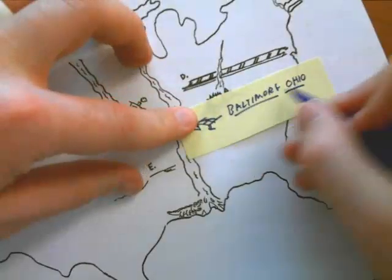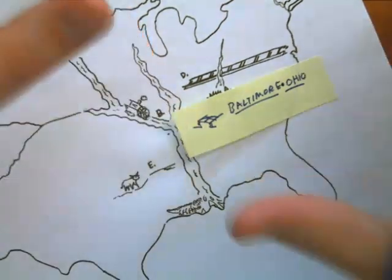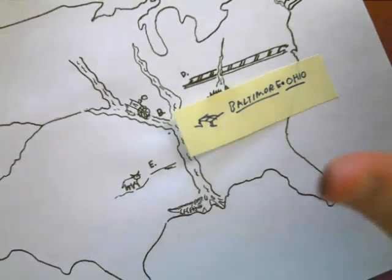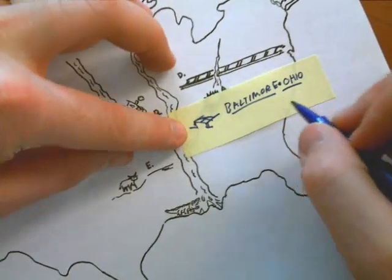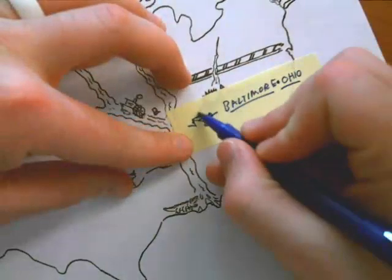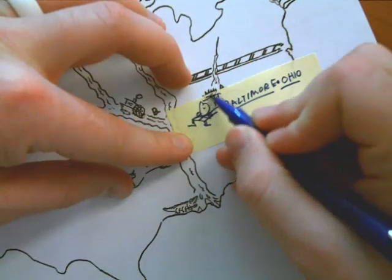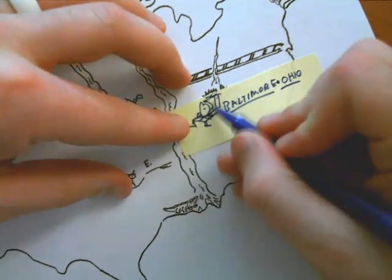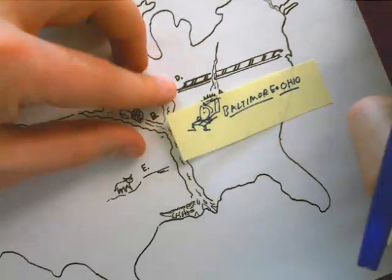The Baltimore to Ohio was the first long-distance rail in the United States. And it was with Baltimore to Ohio that they started to standardize the size of the rail so that trains could travel more easily and connect and be able to travel the length of the country.